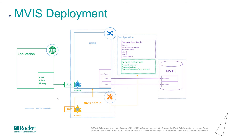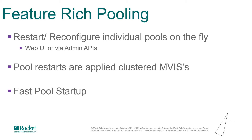Feature-rich pooling means you can restart and reconfigure individual pools on the fly. Because pools are per account, if one account is underperforming you can change it without resetting the entire system — at the account level — without downtime for other accounts or REST endpoints. You pinpoint exactly which account needs reconfiguration and make the change without affecting others.